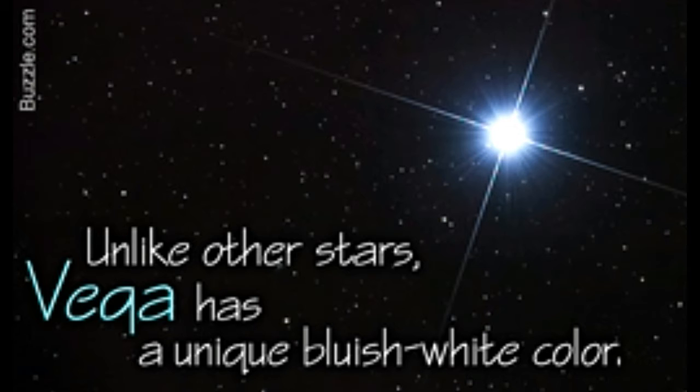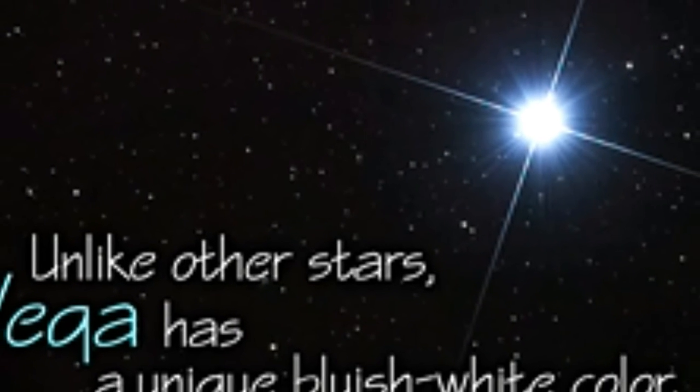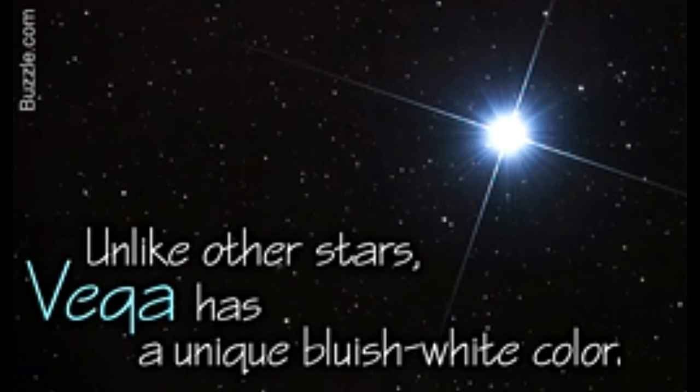Bustle provides some interesting information about the Vega star. The stars Altair and Deneb, along with Vega, form a star pattern known as the Summer Triangle. In this triangle, Vega is the biggest and brightest star.